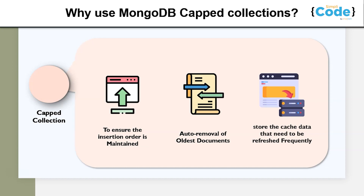Next, we have auto-removal of oldest documents. In order to make room for new documents, capped collections automatically remove the oldest documents in the collection without needing explicit remove operations in MongoDB. Finally, capped collections store cached data that needs to be refreshed frequently. Since MongoDB is a huge NoSQL database with lots of data being generated daily, we need to process and retrieve that information quickly. Capped collections can be a useful tool for storing frequently refreshed data.